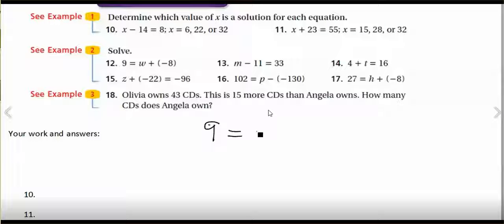Let's look at number 12. In 12, we have 9 equals W plus negative 8. You could also write that as 9 equals W minus 8. It might be a little bit simpler. And we need to solve for W.